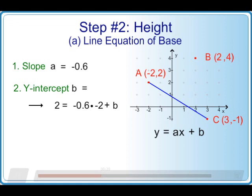We get 2 equals minus 0.6 times minus 2 plus b. We evaluate that product to get 1.2. We subtract 1.2 from both sides to isolate b. We get b is equal to 0.8.